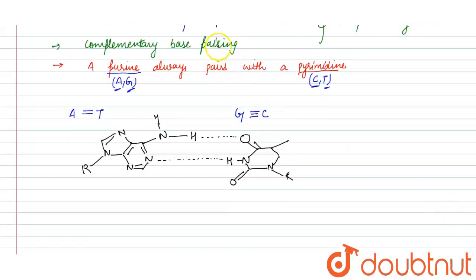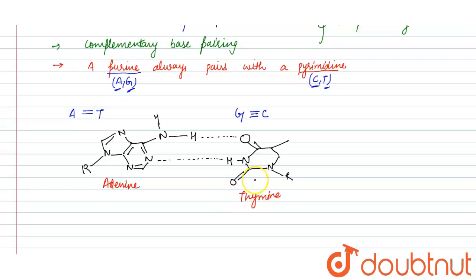As we can see, this is adenine and this is thymine, and both are connected by two hydrogen bonds.